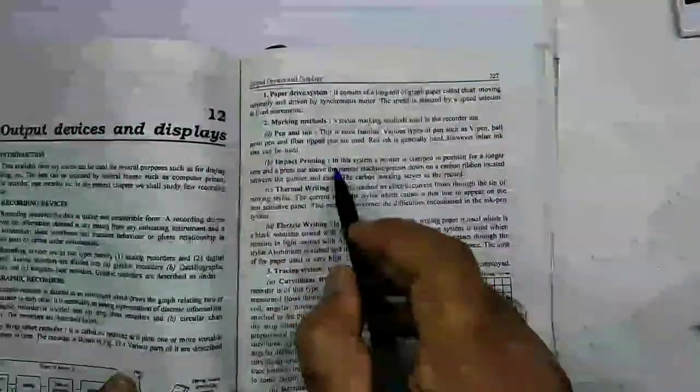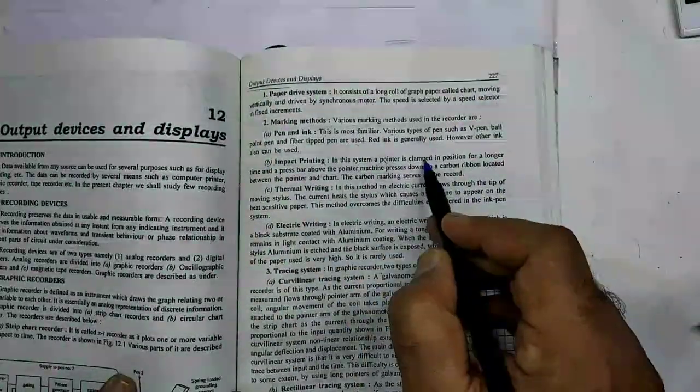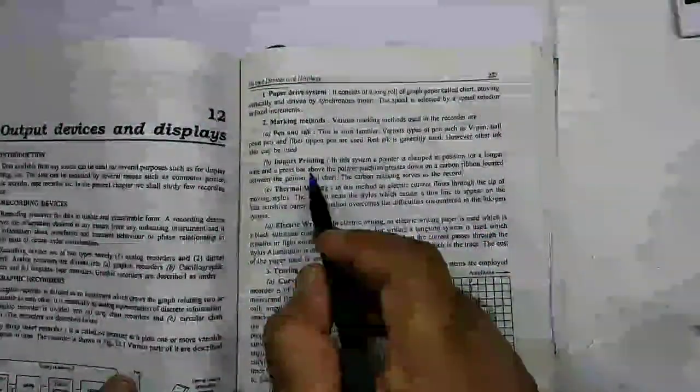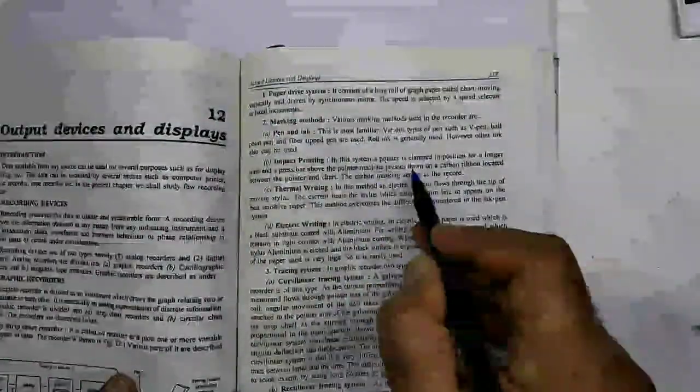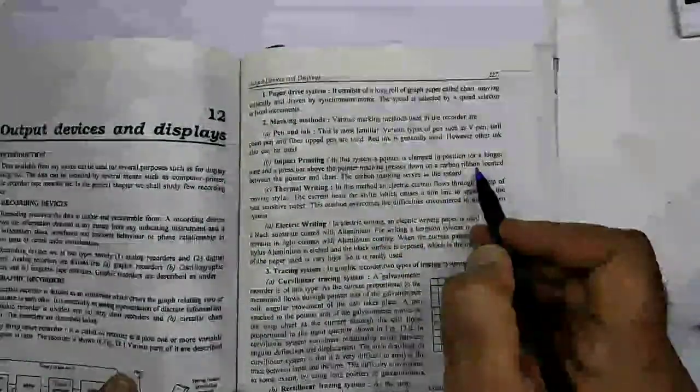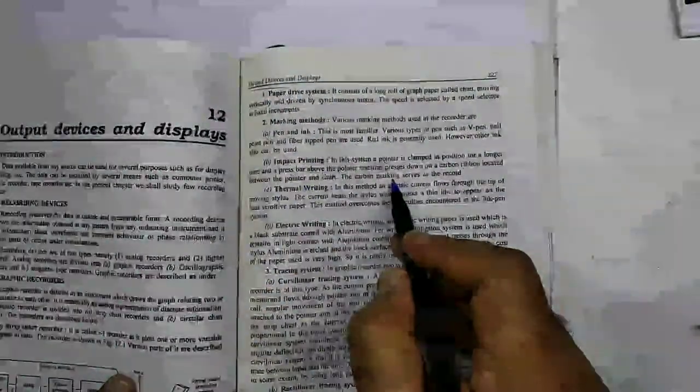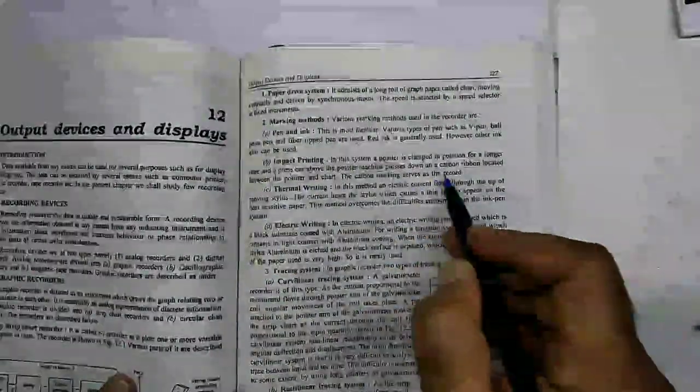Next is impact printing. In this, a pointer is clamped in the position for a longer time and a press bar above the pointer machine presses down on a carbon ribbon located between the pointer and the chart. The carbon marking serves as a record.